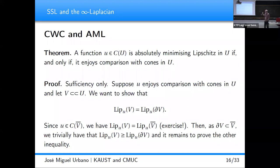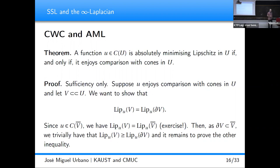Cones are functions of the form: a constant plus another constant times |x - x_0|, where x_0 is the vertex of the cone, a is the height, and b is the slope. We say a function enjoys comparison with cones from above if: for every V strictly contained in U and every cone whose vertex is not in V, if U is below the cone on the boundary of V, then it is below the cone in V. Comparison with cones from below is the dual notion. A function enjoys comparison with cones if it enjoys it from both above and below. These are connected to the notions of viscosity subsolution and supersolution.